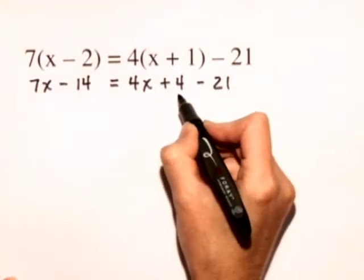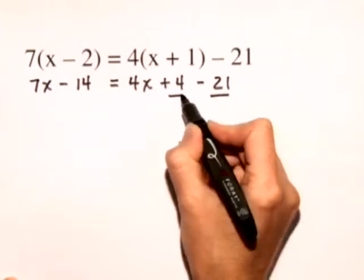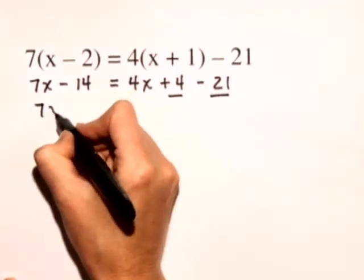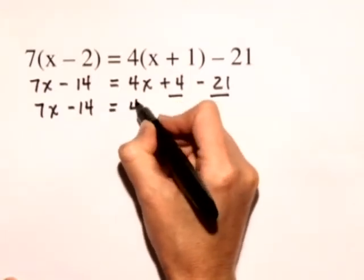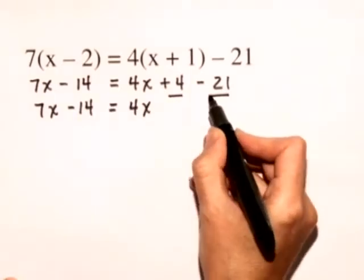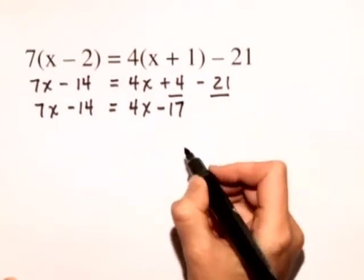Now we'll go ahead and on the right-hand side we'll combine the like terms of those two constants. So we have 7x minus 14 is equal to 4x plus 4 minus 21 gives us minus 17.